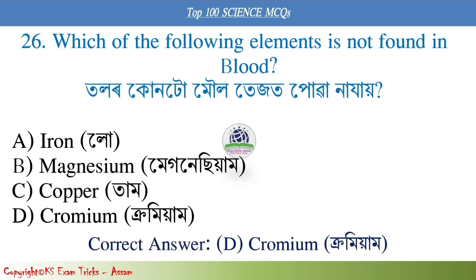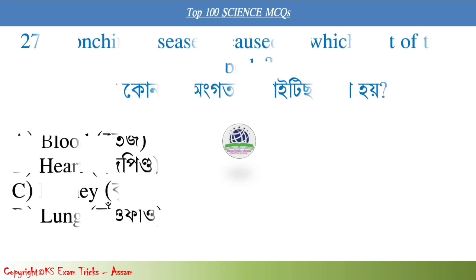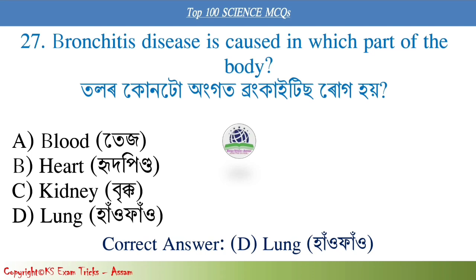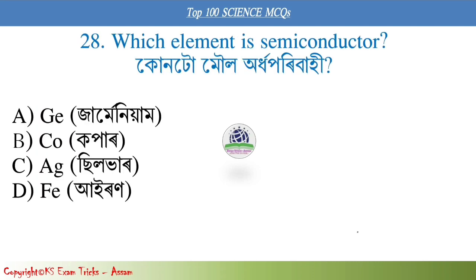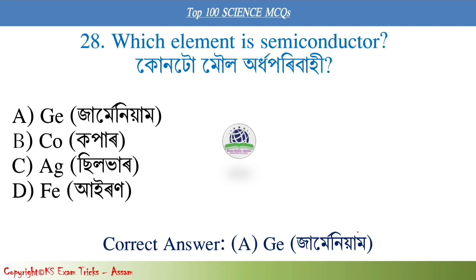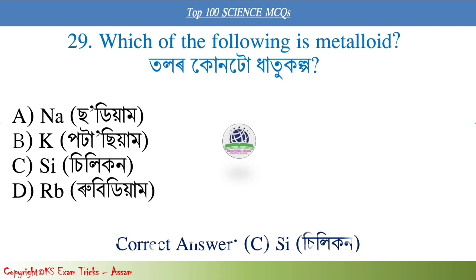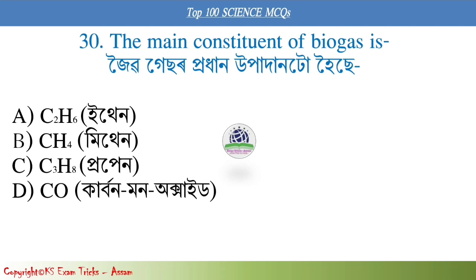Chromium is the correct answer for this question. Bronchitis disease is caused in which part of the body? Which element is a semiconductor? The main constituent of biogas is option C, Methane.